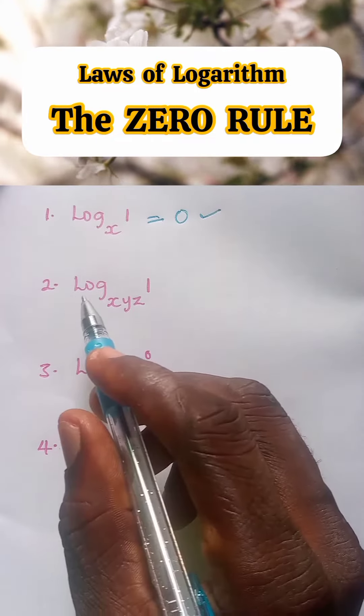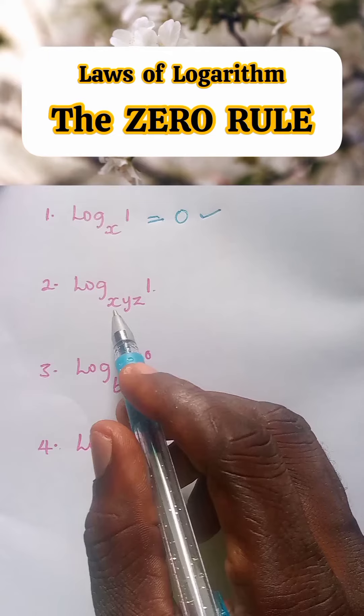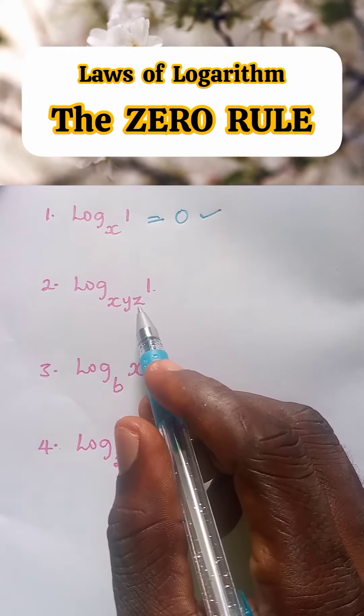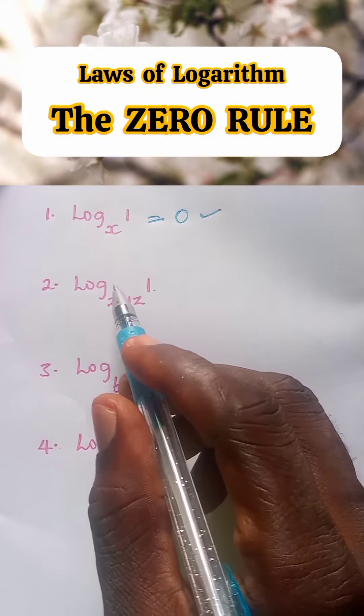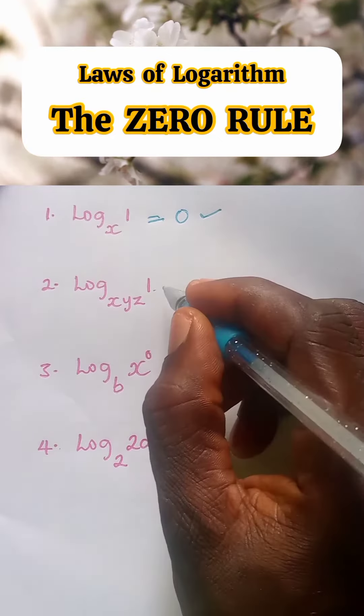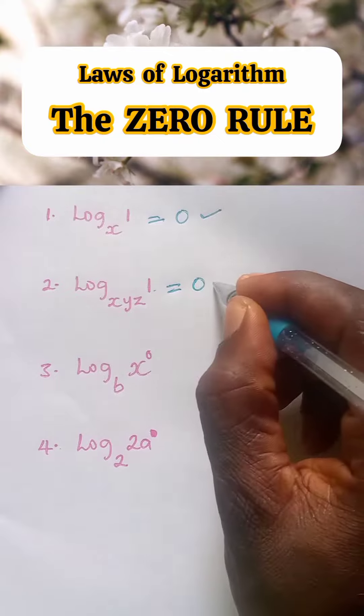Number two, log one base xyz. Irrespective of the magnitude of the base, as long as it is a log reading of one, the answer is equal to zero.